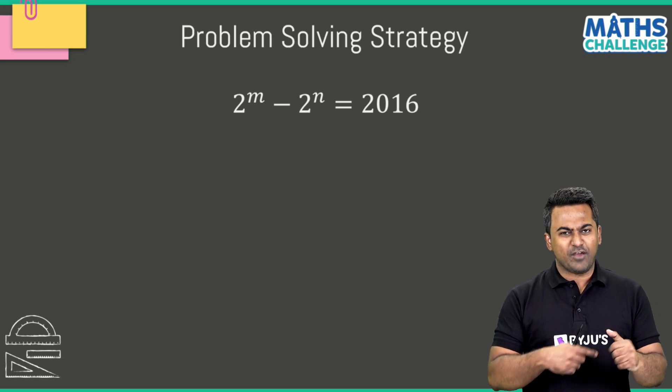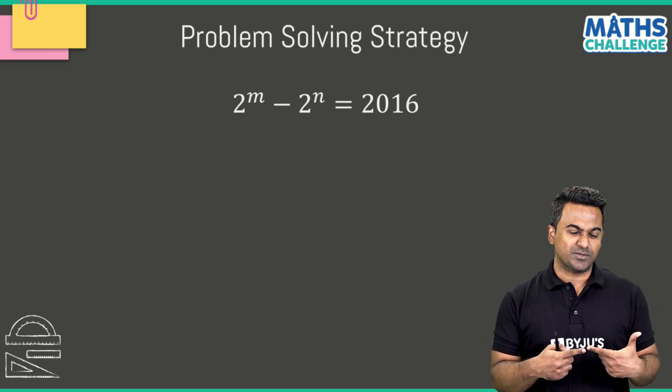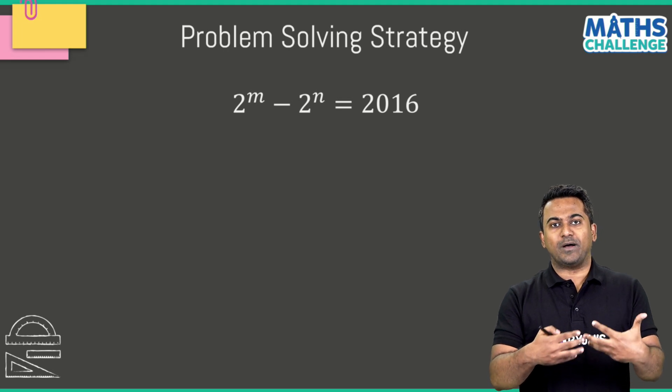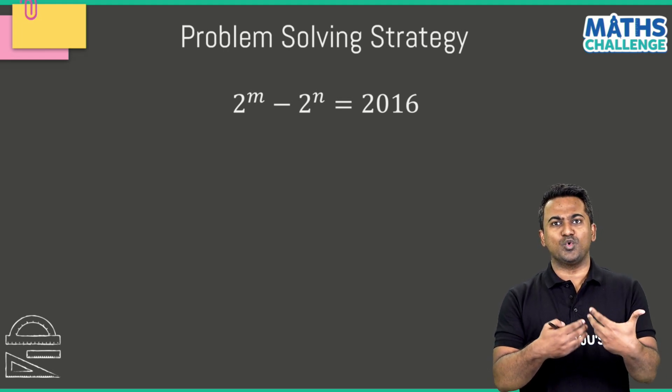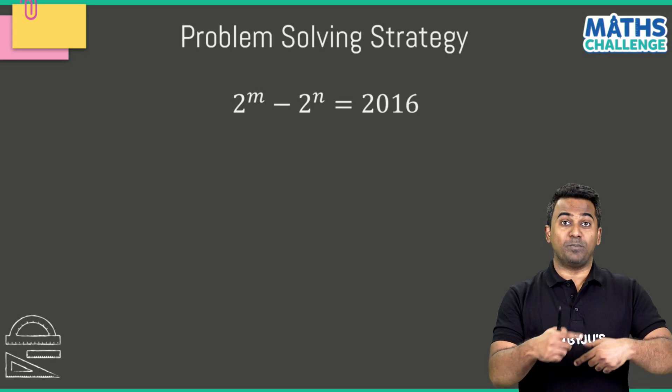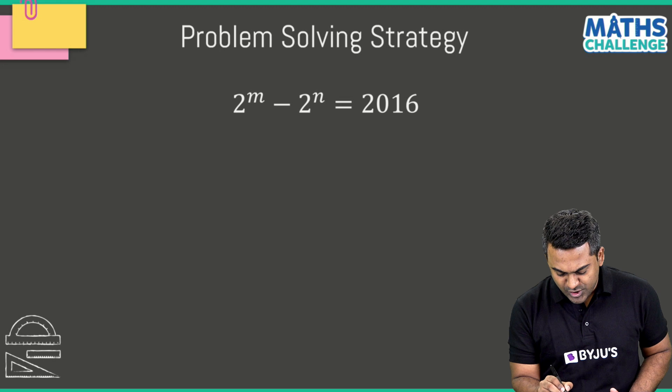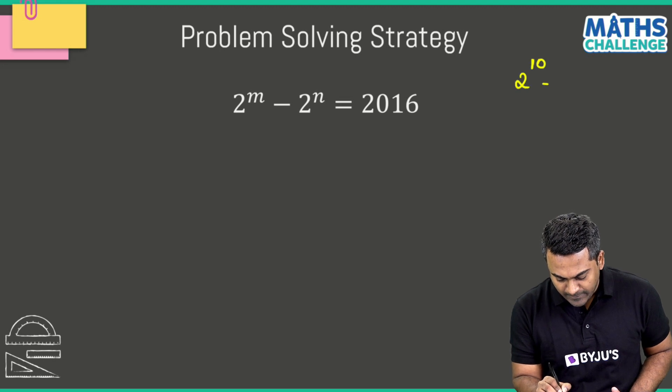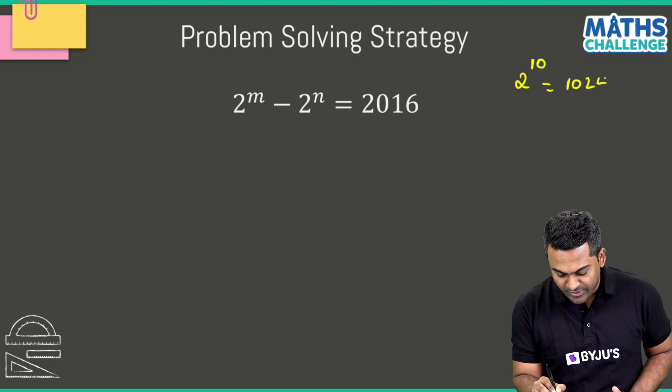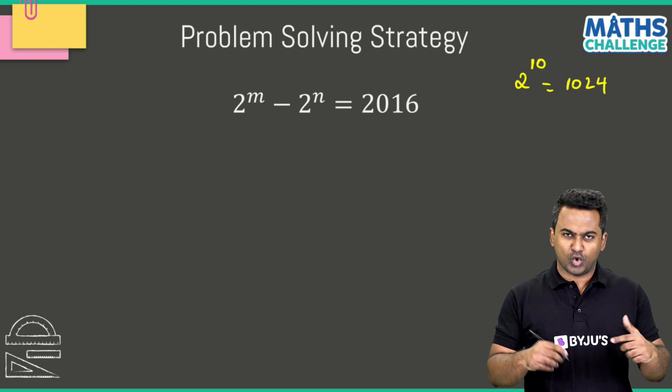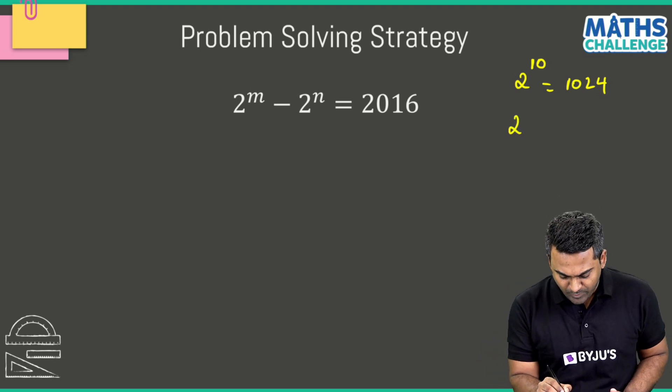Well you could give it a shot if you're very good with calculations. 2^1, 2^2, 2^3, 2^4, 2^5 you must be familiar till here, but 2^6 = 64, 2^7 = 128, and when you do the calculations you'll come to know that 2^10 is going to be 1024.